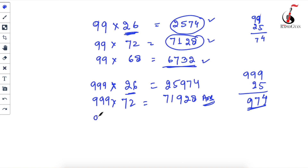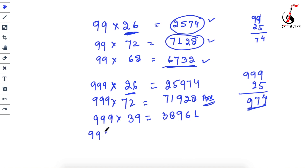For 999 × 39: one less than 39 is 38, then 9 − 0 = 9, 9 − 3 = 6, 9 − 8 = 1. Answer: 38961. For 999 × 544: one less is 543, then 9 − 5 = 4, 9 − 4 = 5, 9 − 3 = 6. Answer: 543456. Check it!